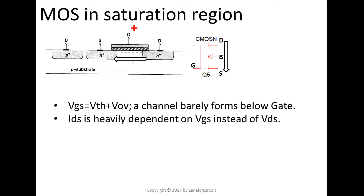VGS is just slightly higher than the threshold of the MOS here. We call it overdrive voltage. That's about 100 millivolts to 200 millivolts, roughly. With that kind of VGS applied on the transistor, a channel barely forms beneath the gate here.